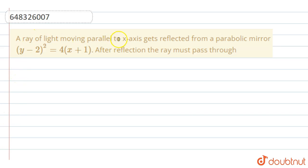A ray of light moving parallel to x-axis gets reflected from a parabolic mirror (y - 2)² = 4(x + 1). After reflection, the ray must pass through what? So that means we have to find the point through which the ray passes.